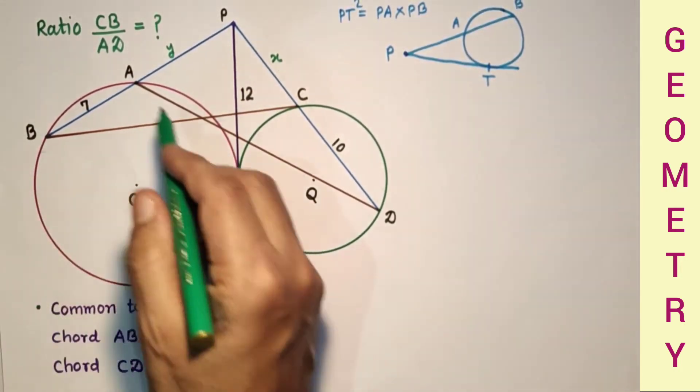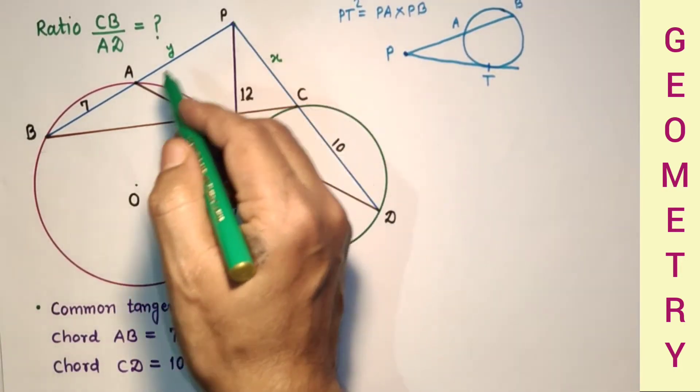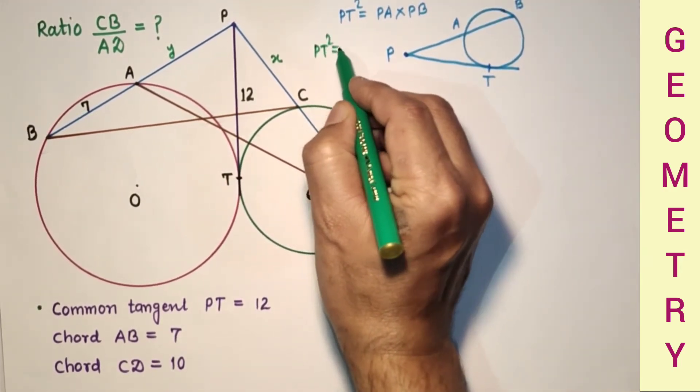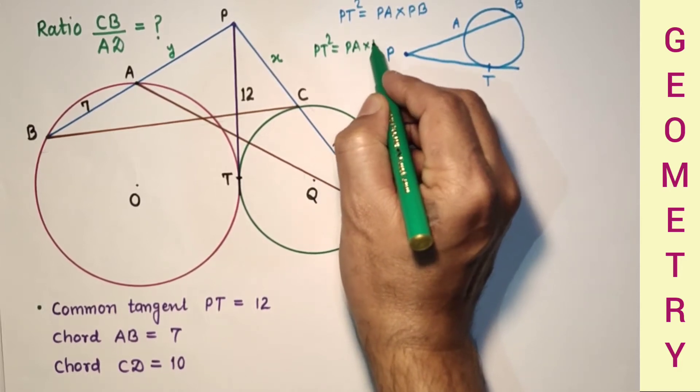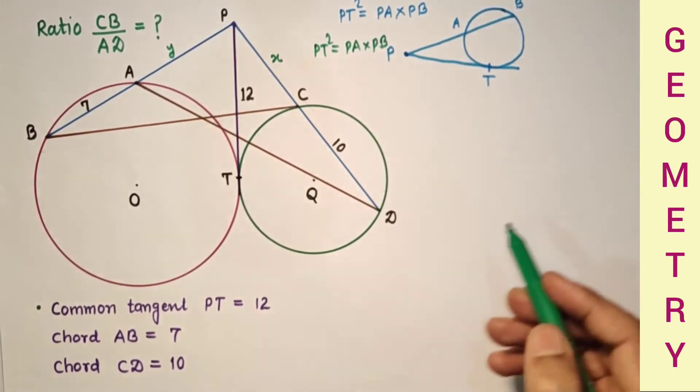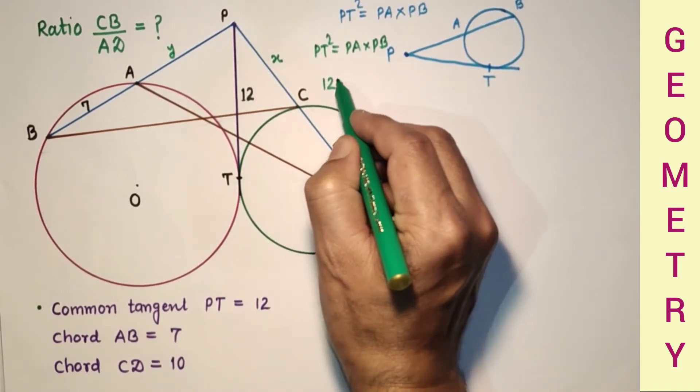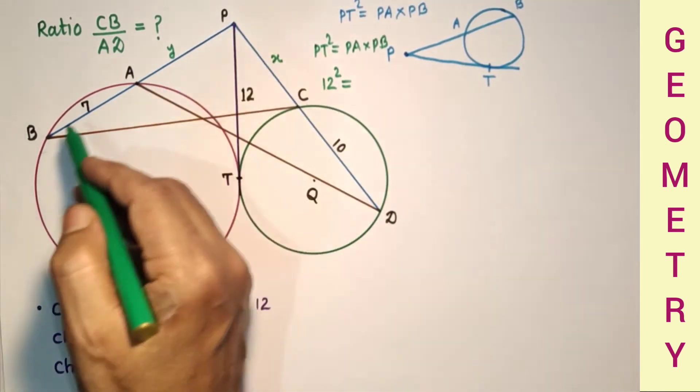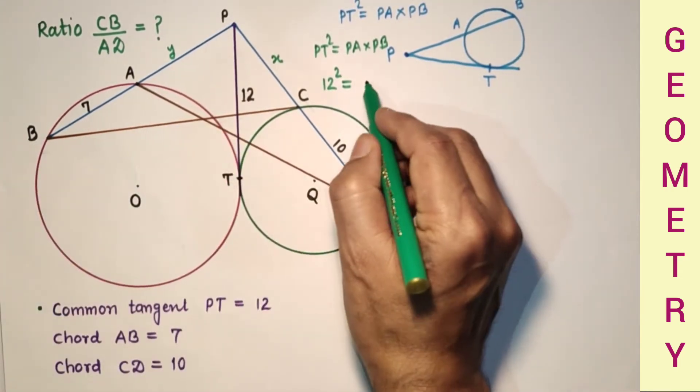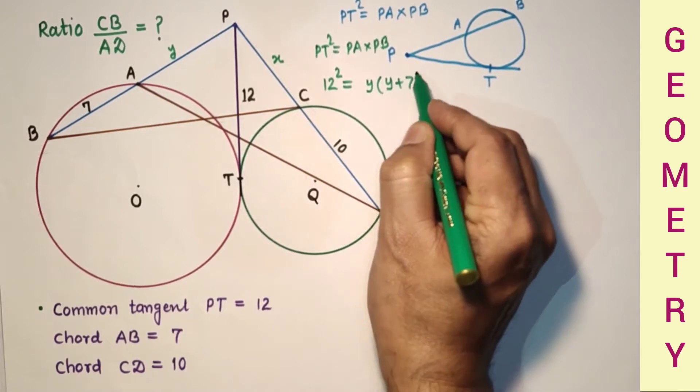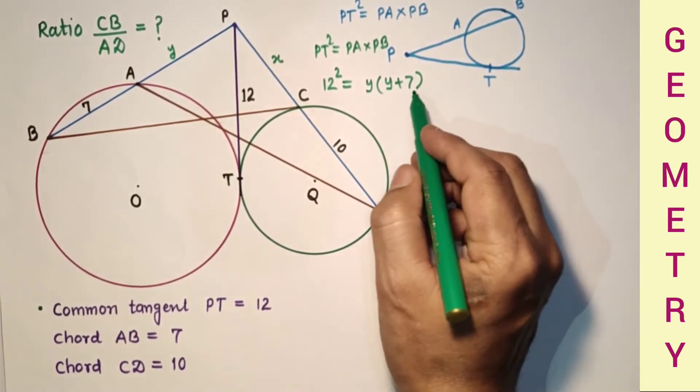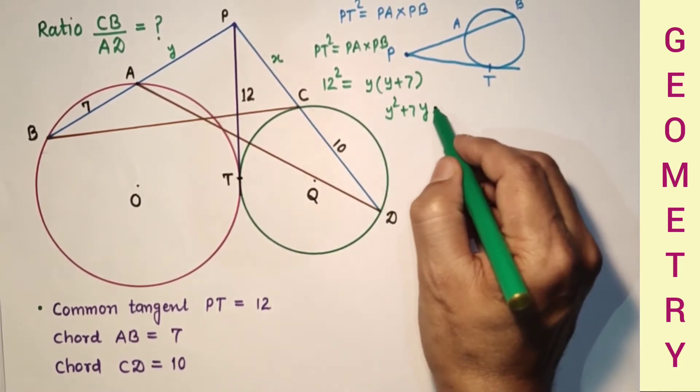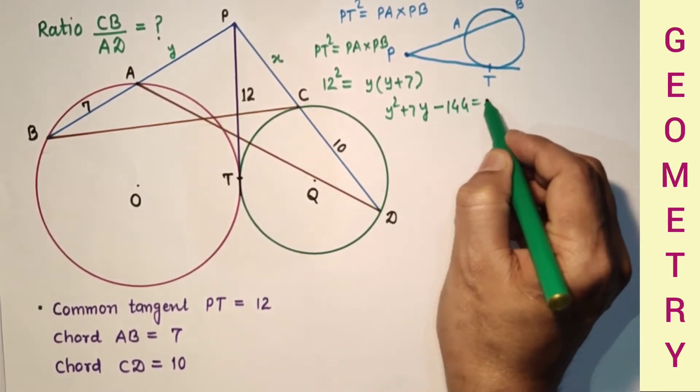So for this circle, PT square is equal to PA into PB. So that PT square is 12 square. So that is PA into PB, which is Y into Y plus 7. So Y square plus 7Y is equal to 144. So Y square plus 7Y minus 144 is equal to 0.